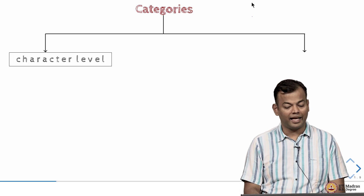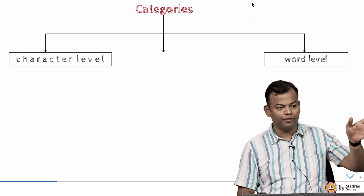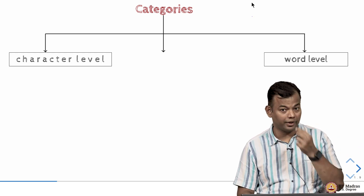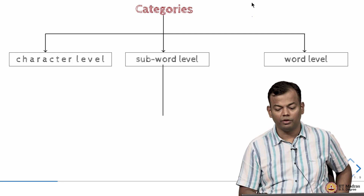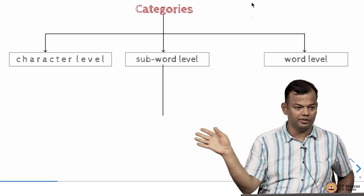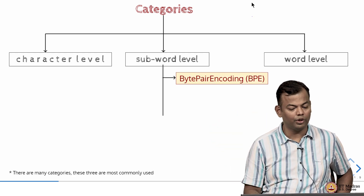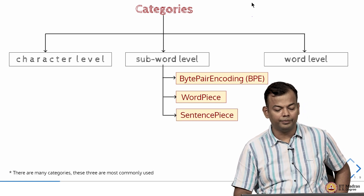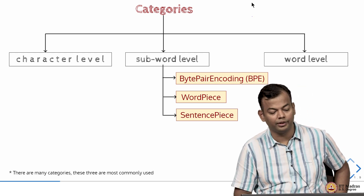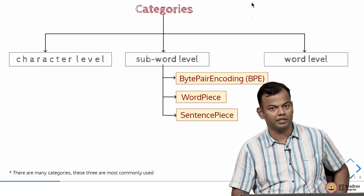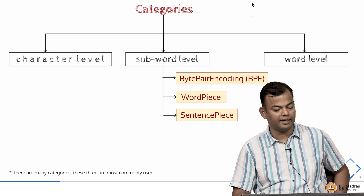So the three categories are: character level — straightforward, just a small Python script; word level — split on spaces; and subword level. Within subword tokenization, we are going to look at three popular methods: Byte Pair Encoding (BPE), WordPiece, and SentencePiece.